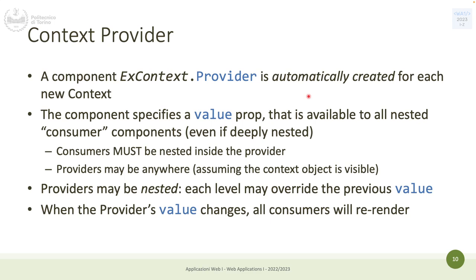At that point you can create a provider. If you use the default value, it is automatically available. If you have a default value, you can use it as an implicit provider, and from that moment on the value defined in the context is available to all nested consumer components that are under this context.